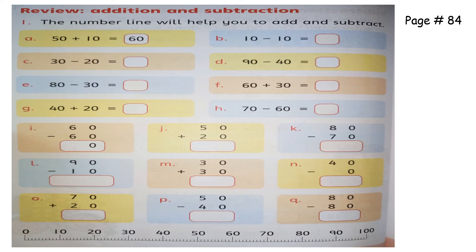Come to page 84. I will do some questions and you have to do the rest by yourself. What is this symbol? This is a plus symbol — it means you have to add 50 and 10 — the answer is already done: 60. Now come to b part: this symbol is minus — subtract 10 from 10 — what do you get? Zero.